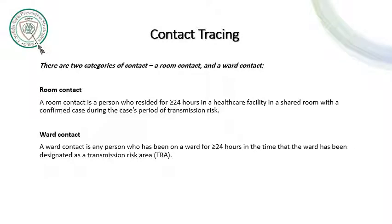In contact tracing, there are two categories of contact: a room contact and a ward contact, and it is very important to differentiate between them. A room contact is a person who resided for 24 hours or more in a healthcare facility in a shared room with a confirmed case during the case's period of transmission risk. A ward contact is any person who has been on a ward for 24 hours or more in the time that the ward has been designated as a transmission risk area (TRA).